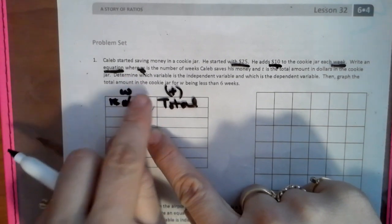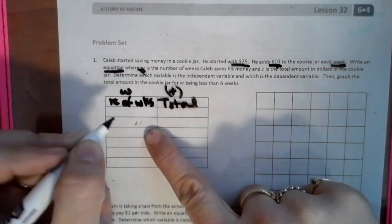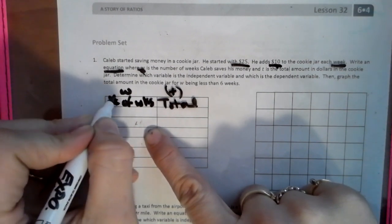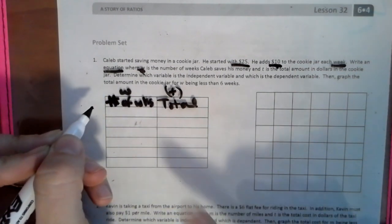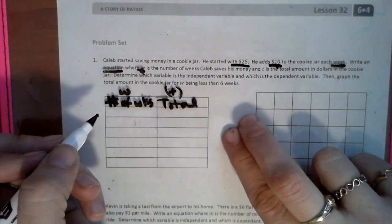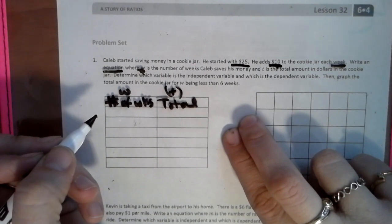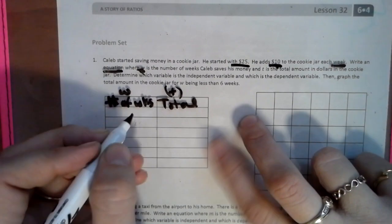So T is our total. We're going to call this W because this is our number of weeks. Let me write that a little bit better. It's WKS if you're wondering. That's number of weeks, and this is what you guys call your hashtag symbol. It says determine the variable, the independent variable. Then graph the total amount in the cookie jar for W being less than six weeks.